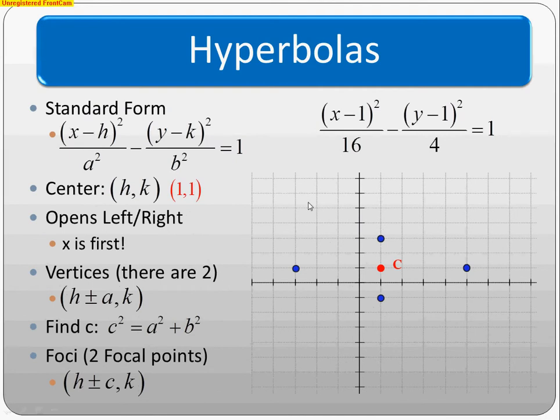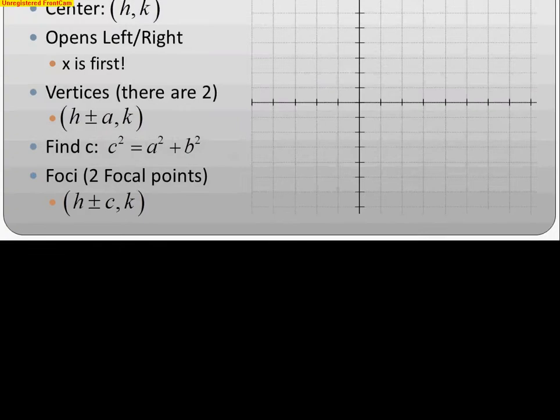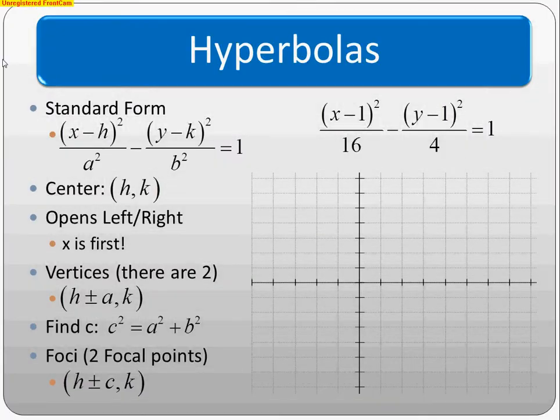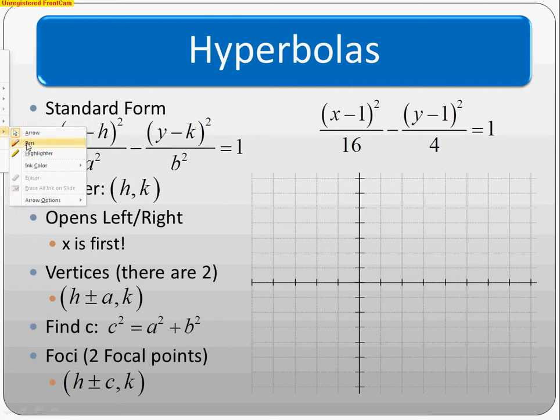Let's look at hyperbolas. Notice they're pretty similar to ellipses. The big difference is we have subtraction going on. This subtraction tells you we're doing hyperbolas, because ellipses are the same thing but with addition.